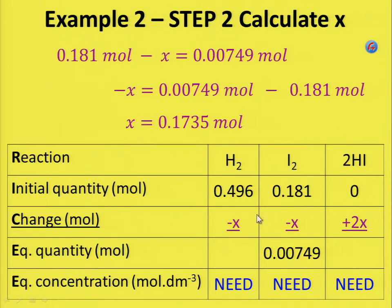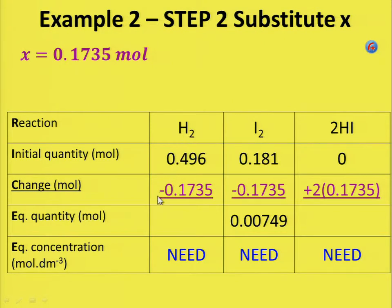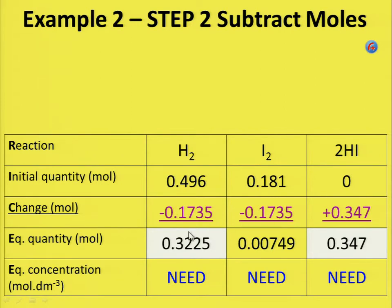Now complete the table by substituting x. Hydrogen: 0.496 minus 0.1735 gives you 0.3225. Iodine: 0.181 minus 0.1735 gives you 0.00749. And HI becomes 2 times 0.1735, which is 0.347. Now your table is almost complete.